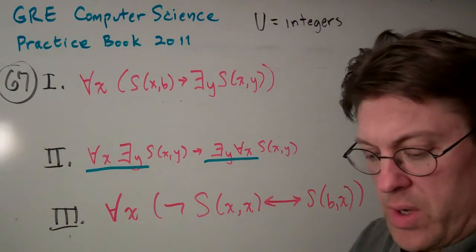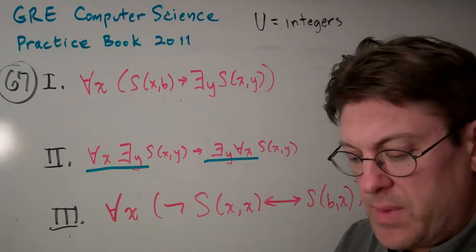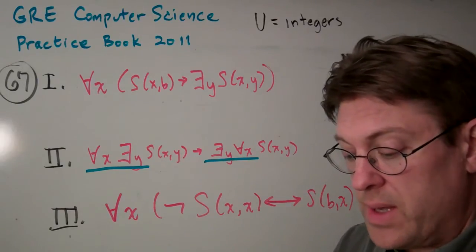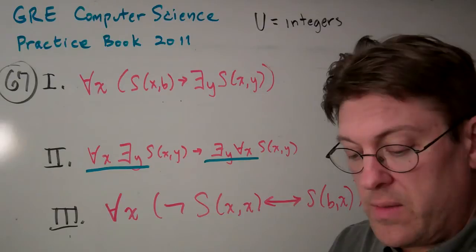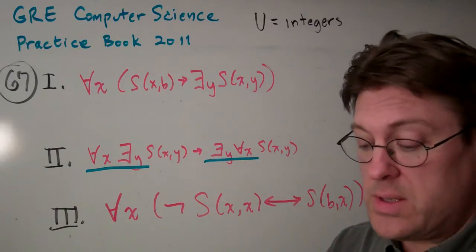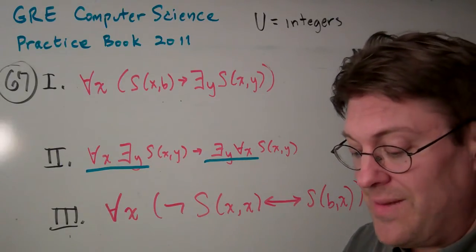Question 67. Recall that a predicate logic statement is contingent if its truth value depends on the choice of the universe and on the interpretations of the predicate symbol S and the constant symbol B involved.